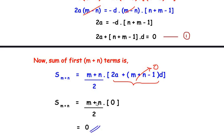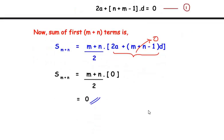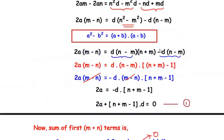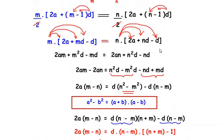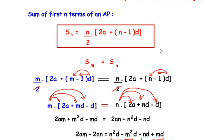We have shown that the sum of m plus n terms is zero. I hope you understood all the steps and liked the video. If you found this video useful, you can click on these playlists where you will find more examples of this kind. If you are enjoying my videos, please like, share, and subscribe to my channel. Thank you for watching.